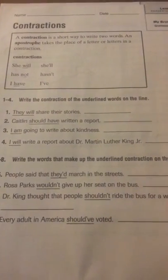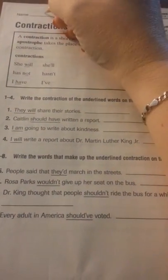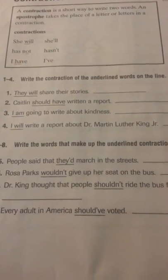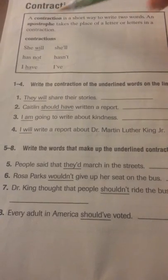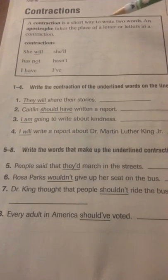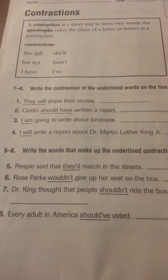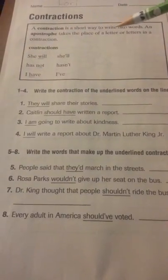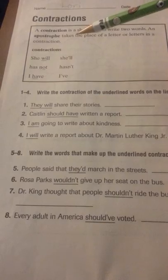Okay, contractions. That's a review. Let's put our name on our paper. Contractions you've done before. A contraction is a short way to write two words. An apostrophe takes the place of a letter or letters in a contraction.